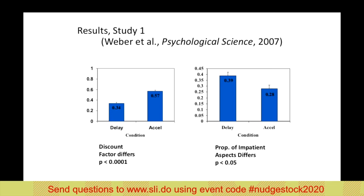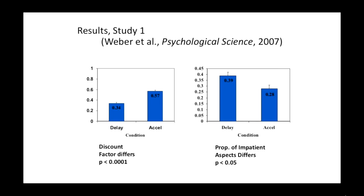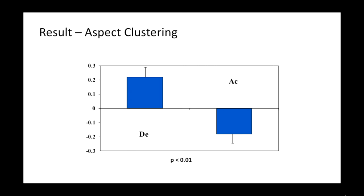Looking at the left-hand slide, we replicate the result: people in the delay condition are more impatient — lower bars mean a dollar in a year's time is worth less. On the right, under the delay condition, when people are more impatient, they generate more arguments for the immediate option, which is the default. Our clustering algorithm shows the 'now' choice is considered first in the delay condition and second in the acceleration condition. In other words, the default is considered first.